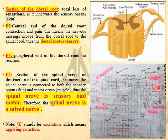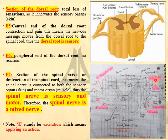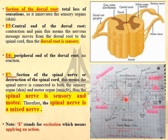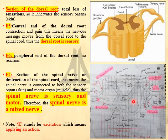E6: excitation at the peripheral end of the dorsal root. Since it is cut, there is no pathway for the message to enter the spinal cord, so no reaction occurred. As a conclusion: the dorsal root is sensory, responsible for receiving sensory messages from sensory organs and taking them into the central nervous system (brain and spinal cord). Then a motor message is sent via the ventral root to the motor organs (muscles) to achieve movement.